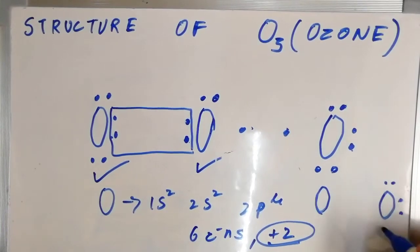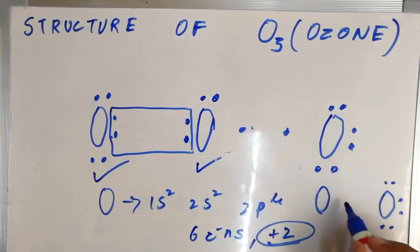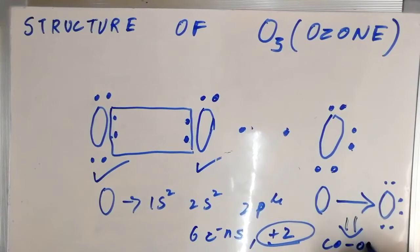So it was having one two three four five six valence electrons and these two electrons are represented as this. This is called a coordinate bond.